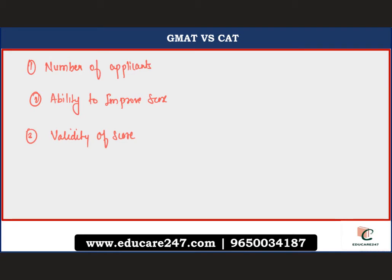Comparing GMAT versus CAT on three points: First, number of applicants — both have shown consistent rises over the last five years. GMAT, being conducted throughout the year, has slightly more applicants, but CAT is not far behind with almost two lakh applicants every year. Second, ability to improve your score — CAT comes only once a year, so you have only one chance. With GMAT, if you score less, you can re-appear within two to three months, though it is quite expensive at around 17,500 rupees.